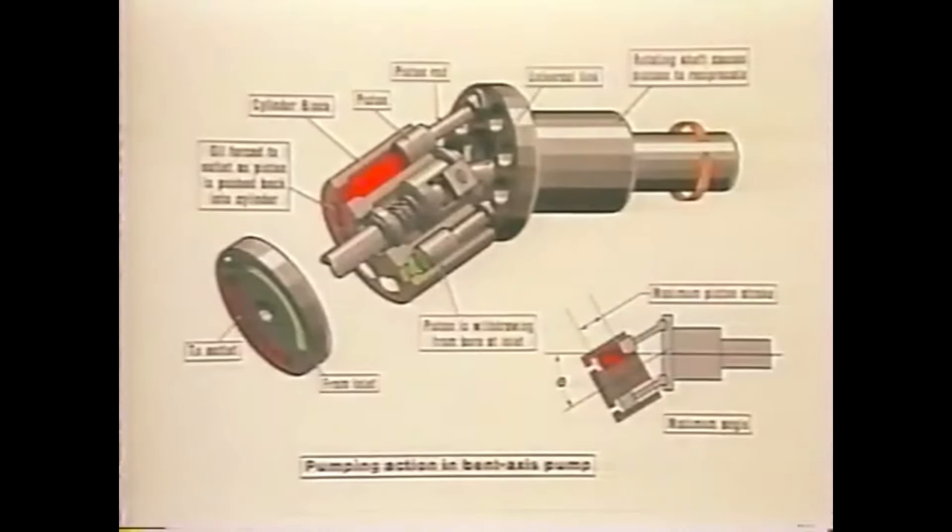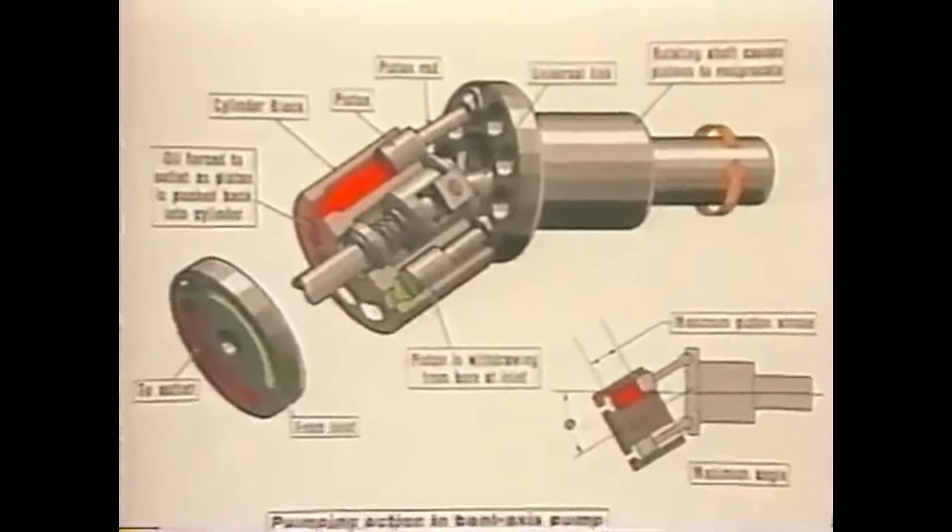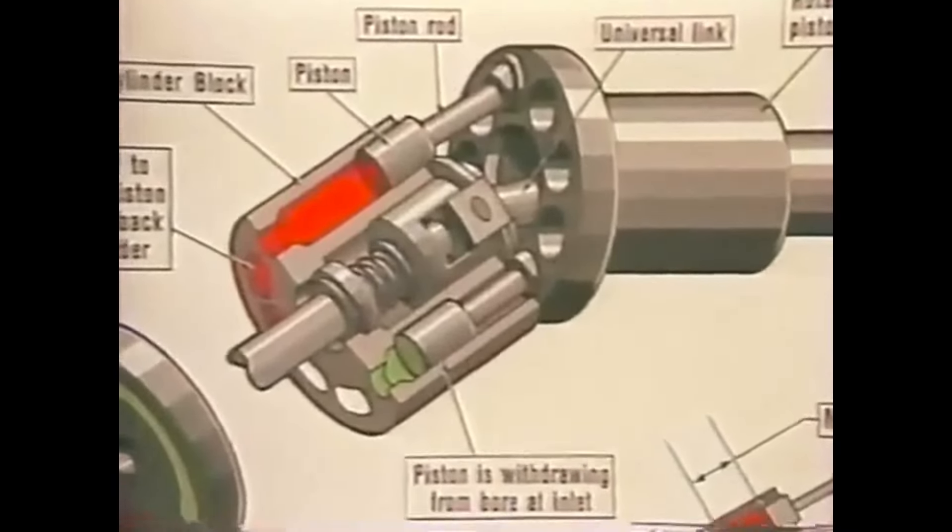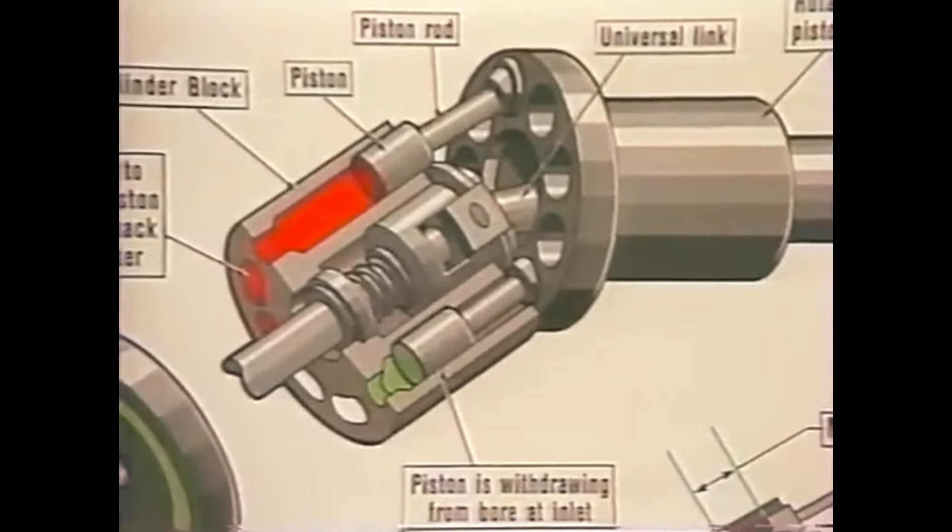In axial pumps, the pistons are parallel to each other and to the cylinder block axis. They may be either bent axis or inline units. The cylinder block in a bent axis pump rotates at an angle to the drive shaft. The pistons are fastened to the drive shaft flange by ball joints and are forced in and out of their bores as the distance between the cylinder block and drive shaft flange changes.